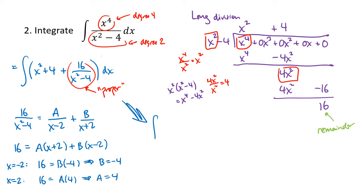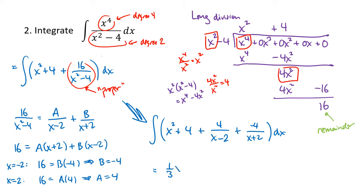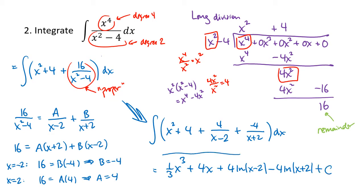Everything is now decomposed. We have the integral of x squared plus 4, plus positive 4 over x minus 2, plus negative 4 over x plus 2. Integrating: the antiderivative of x squared is 1/3 x cubed, the antiderivative of 4 is 4x, the antiderivative of 4 over x minus 2 is 4 natural log of the absolute value of x minus 2, and minus 4 times the natural log of the absolute value of x plus 2, plus C.